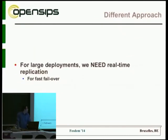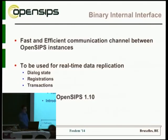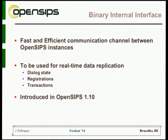We reached the conclusion that for large deployments processing a significant amount of traffic on a single machine, we needed real-time replication and didn't want to rely on the database for synchronizing machines. So we built a binary internal interface introduced in OpenSIPS 1.10, the current release. This is designed to be a fast and efficient communication channel between two or multiple OpenSIPS instances. The interface is data-agnostic — so far we use it to synchronize dialogue states, registrations, and transactions — but developers can implement replication of any data in real time.